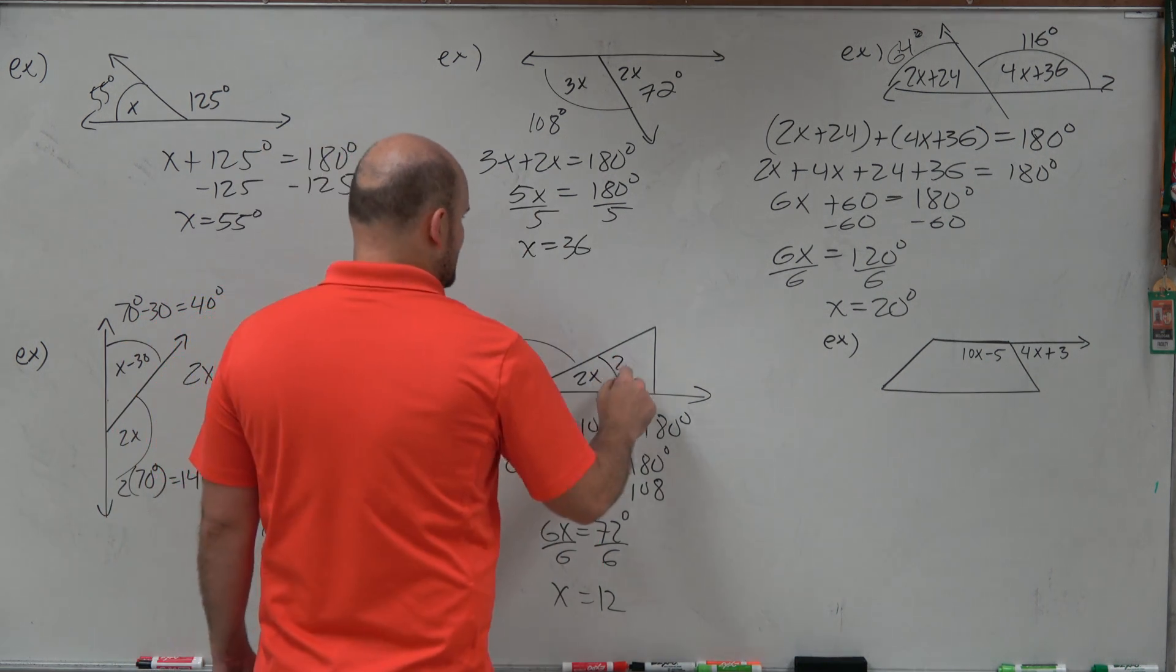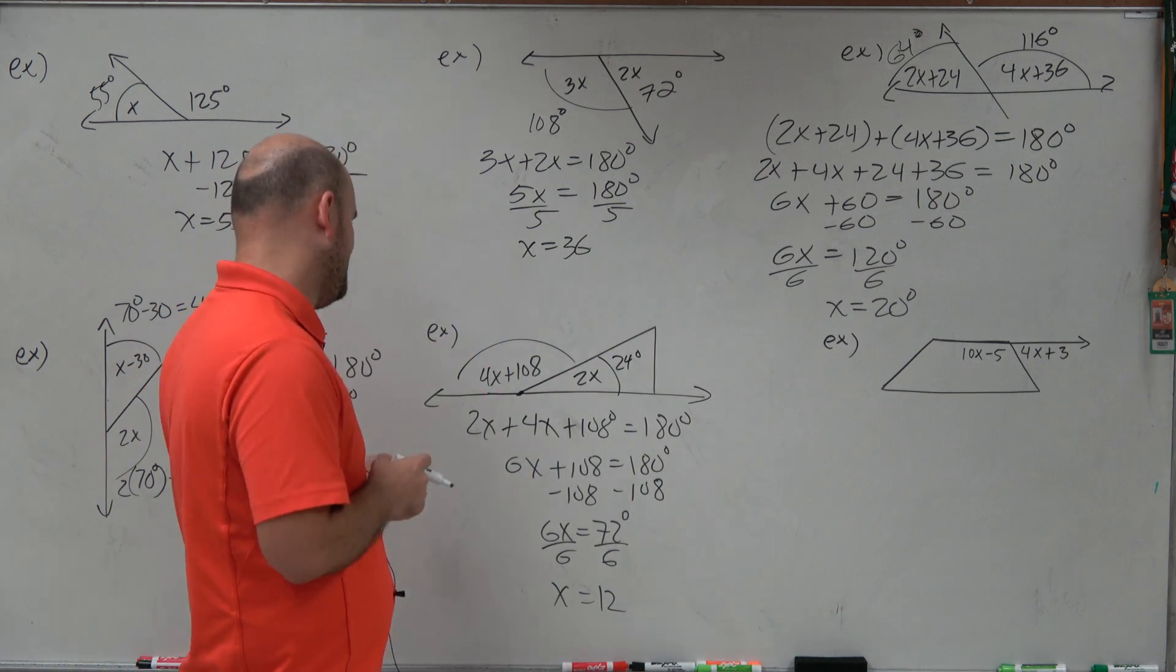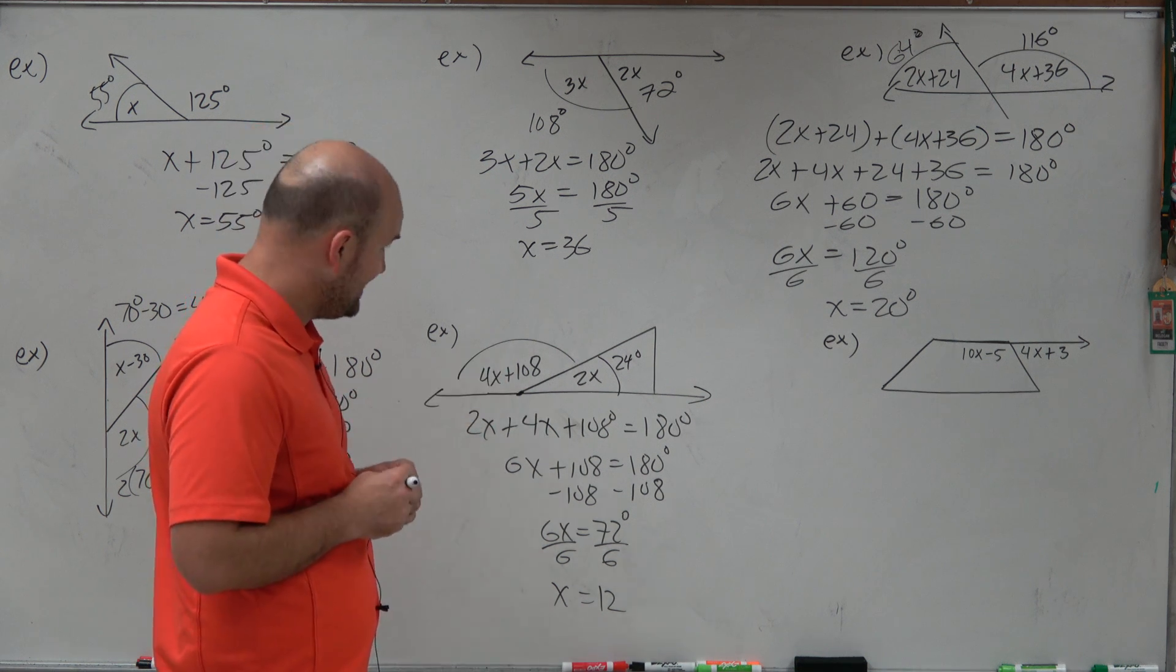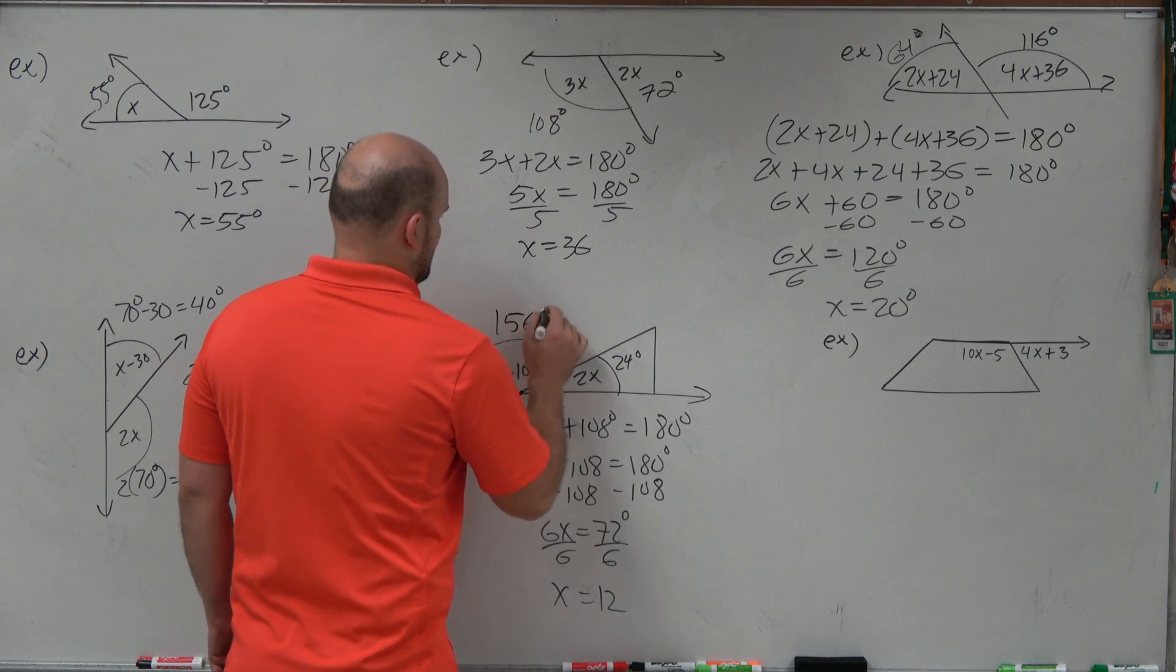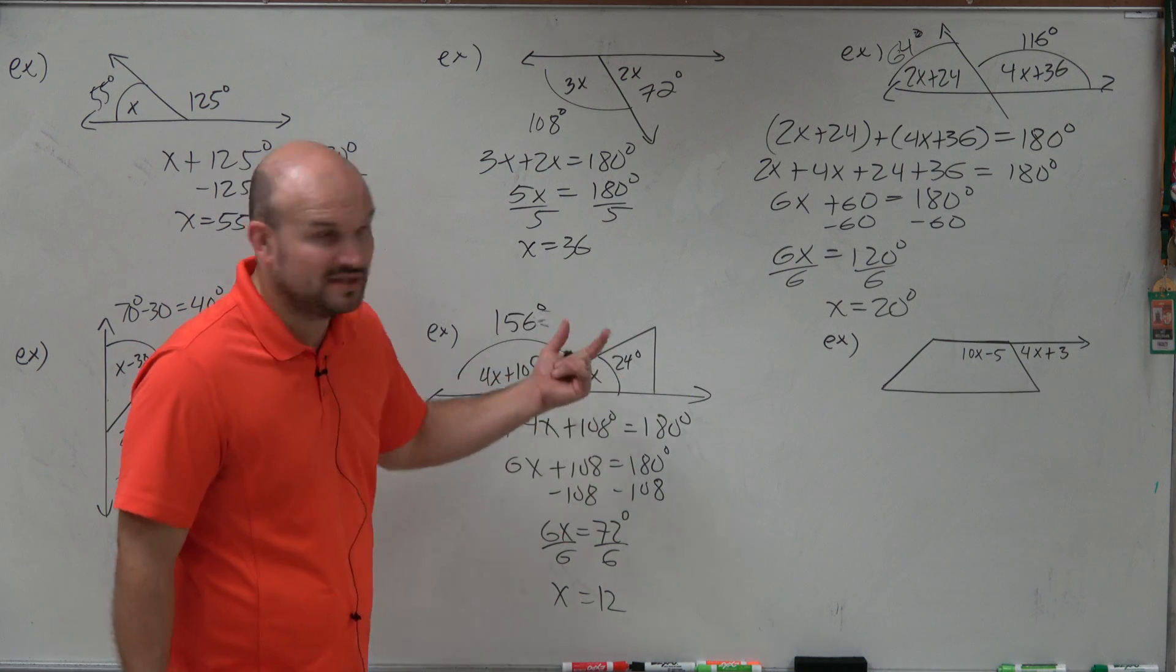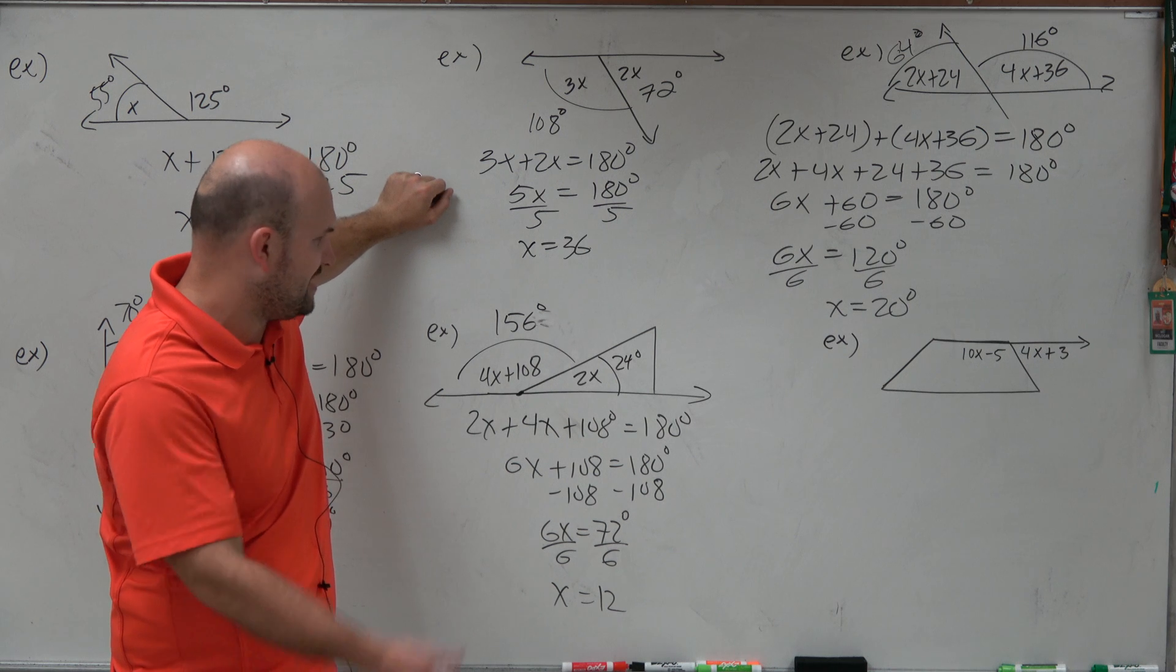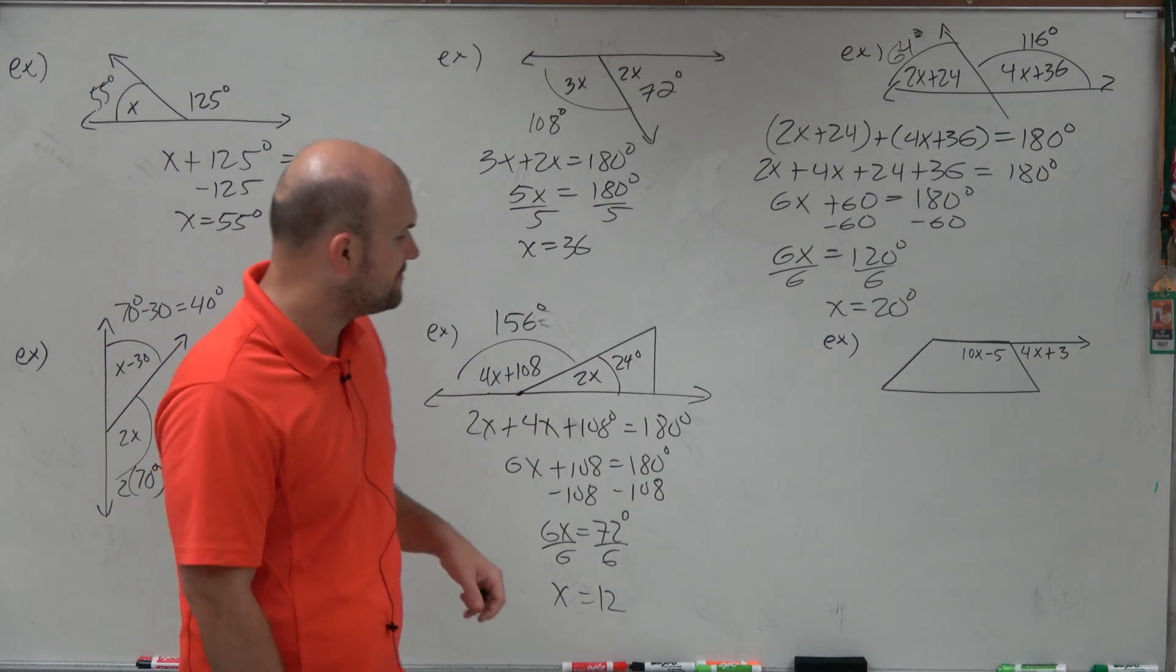So 2 times 12 is going to be 24 degrees. And then 4 times 12 is going to be 48 plus 108 is going to be 156. And again, I'm just doing my math. All I'm doing is plugging in 12 for x on both of these. And by doing that, I just want to double check. I get 180. 156 plus 24 adds up to 180. Perfect.